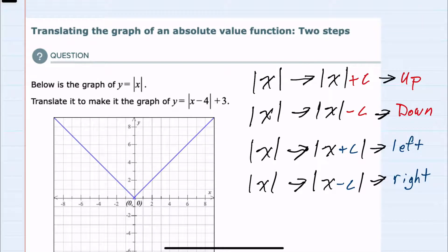So to start, we'll recall that when we have an absolute value function, if we add a constant outside of the absolute value, that will shift that function up. If we subtract a constant outside the absolute value, that shifts down.